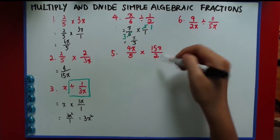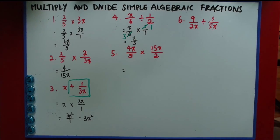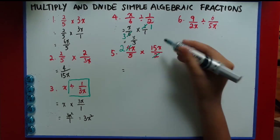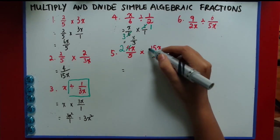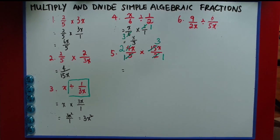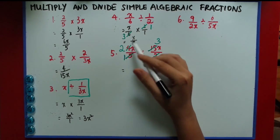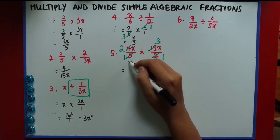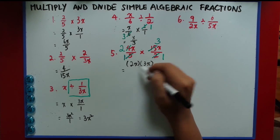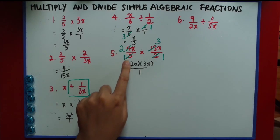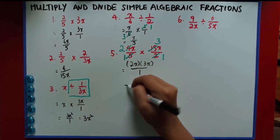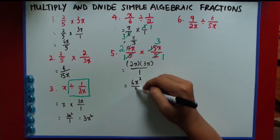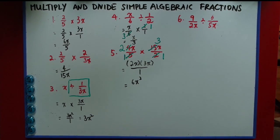It gets a little bit more tricky as we go on. So again, I will illustrate cancelling. 4 and 2 have a common factor of 2: 4 divided by 2 is 2, and 2 divided by 2 is 1. For 15 and 5, similarly, I divide by 5 to get 3 and 1. So all I have to do is multiply 2x times 3x over 1 times 1, which gives 6x squared over 1. Since dividing by 1 is redundant, the answer is 6x squared.